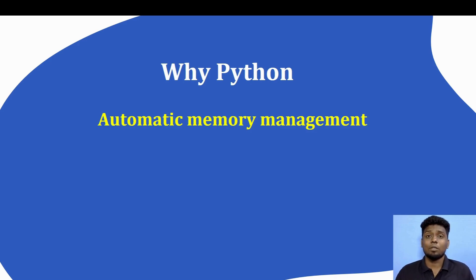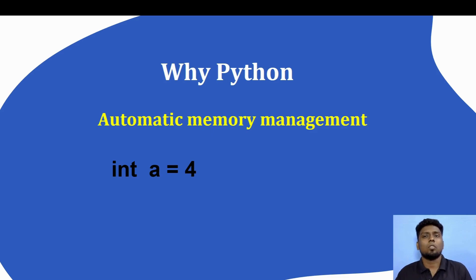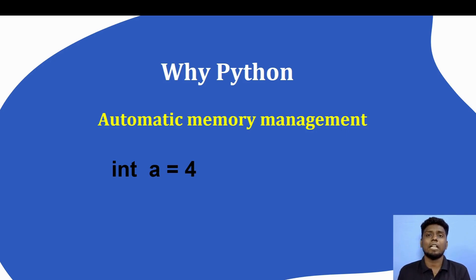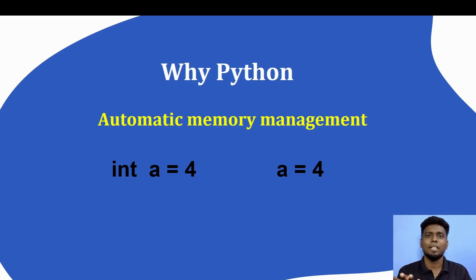Second interview question: why is there automatic memory management? In C program, if you write int a = 4, you need to declare the data type — integer, float, or character. That is the declaration error in C. In Python, you just write a = 4, and because 4 is a number, Python automatically assigns it as an integer. That is Python's automatic memory management.